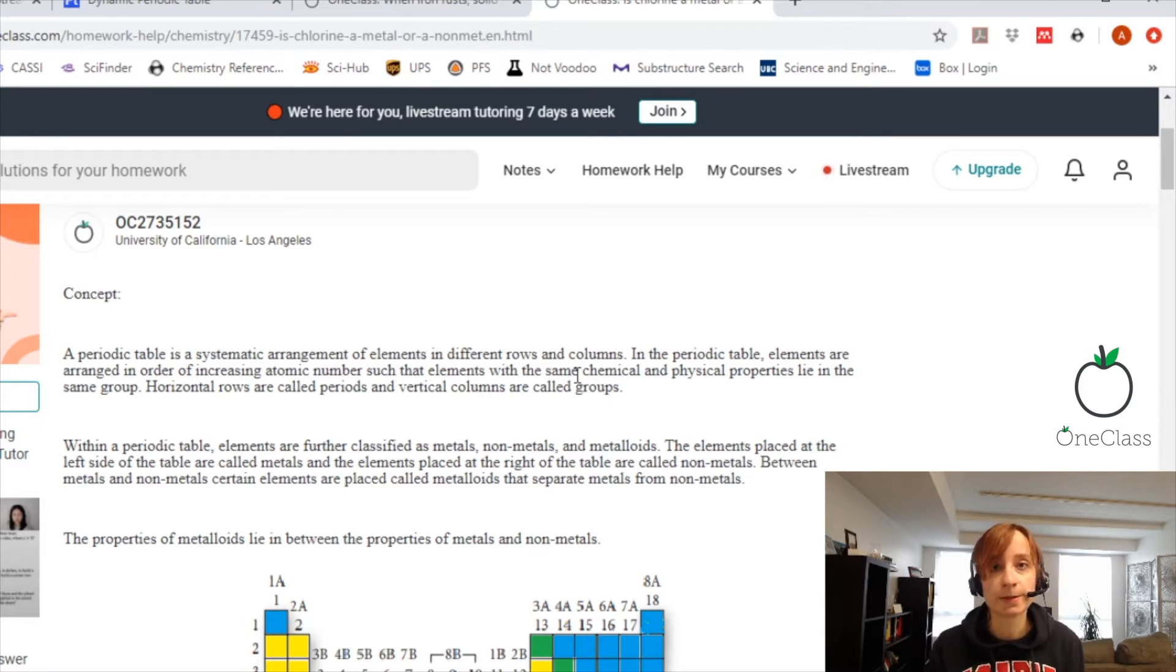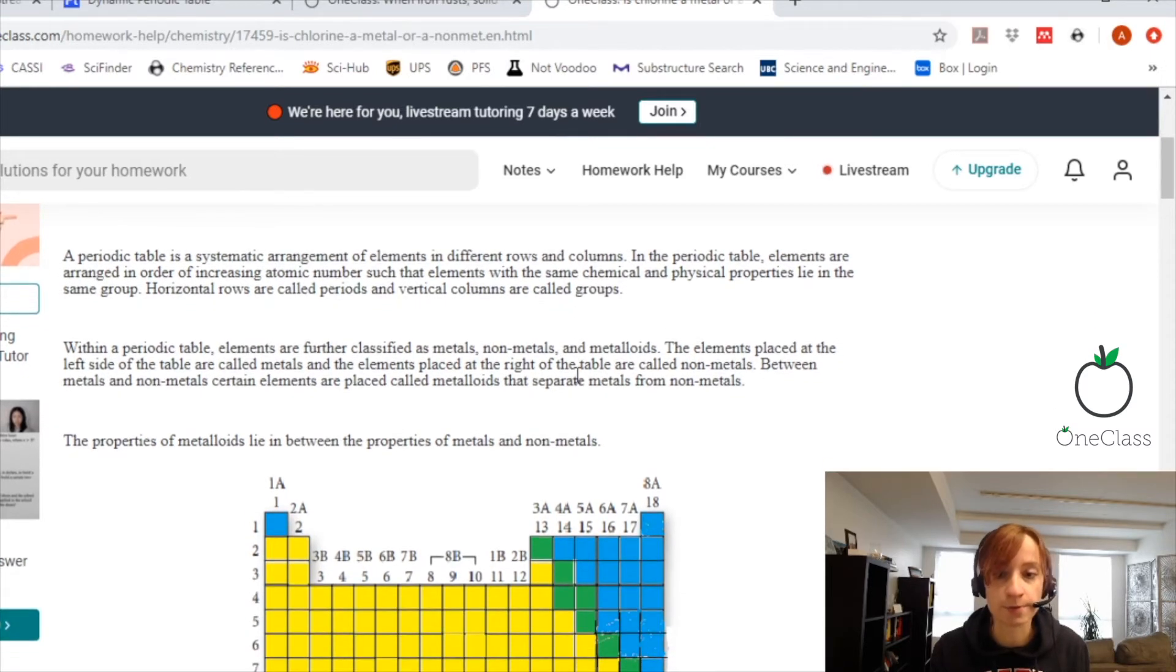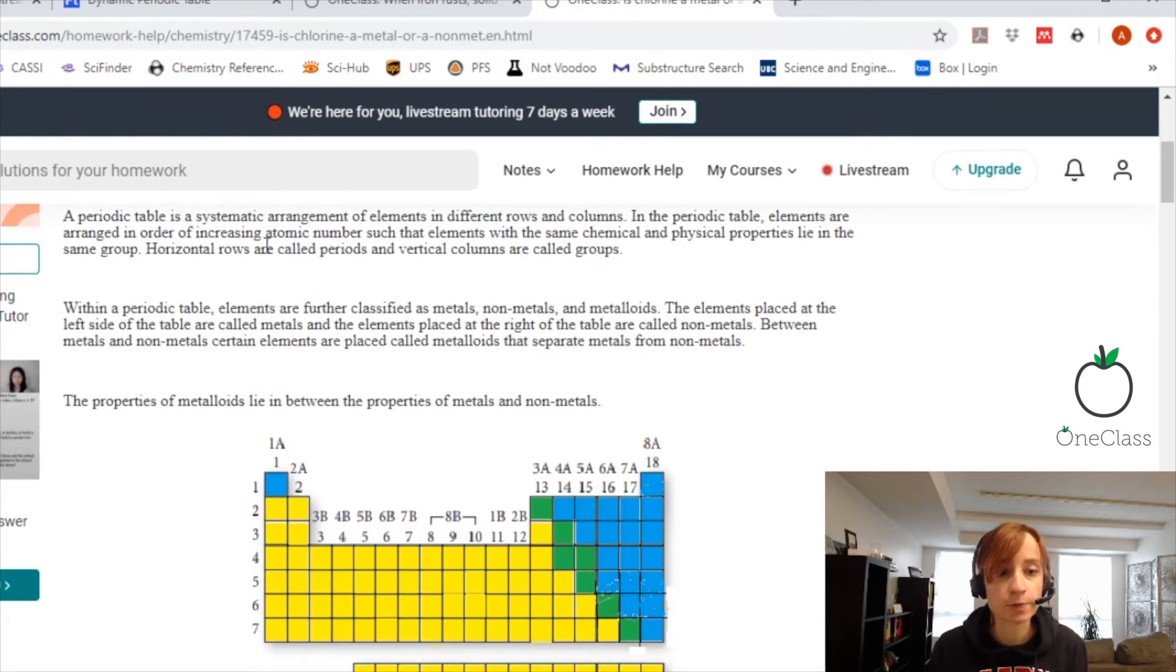So the periodic table may seem like a random assortment of elements, but they're actually arranged very systematically in different rows and different columns. The elements are arranged in order of increasing atomic number, such that elements with the same chemical and physical properties lie in the same group.